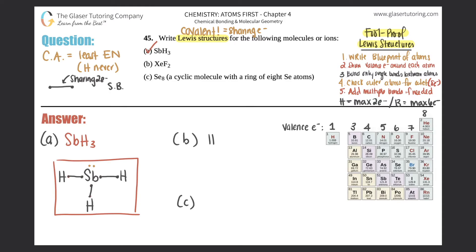Part B: xenon difluoride, XeF₂. First, determine the central atom — always the least electronegative. As you go left to right across a period, electronegativity increases; top to bottom it decreases. Fluorine is the most electronegative element — nothing beats fluorine. So xenon goes in the center by default, surrounded by two fluorines. That's the blueprint.